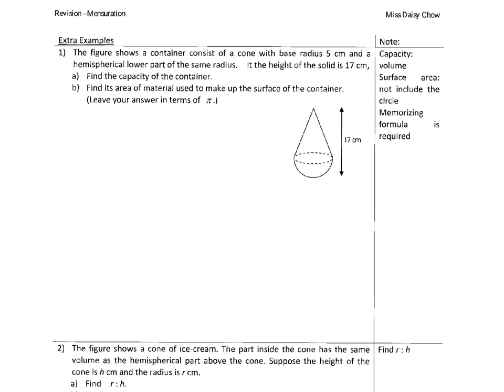The figure shows a container consisting of a cone with base area radius 5 cm and a hemisphere — the lower parts of the same radius. The total height of the solid is 17 cm. Since the radius is 5 cm, the height of the cone would be 17 minus 5, which equals 12 cm.